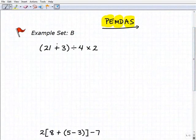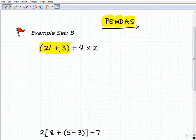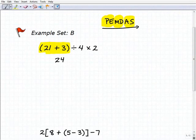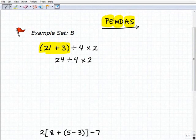So I look at my first problem, I'm looking for parentheses or grouping symbols. And of course, I have them right here. So I have to do what's inside of the parentheses first. So I have 21 plus 3. Of course, that's going to be 24 divided by 4 times 2.